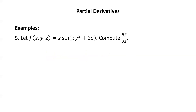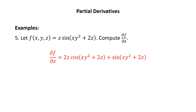Let f of x, y, z equal z sine of xy squared plus 2z. Compute the partial of f with respect to z. This is a product rule: the first term z times the derivative of sine of xy squared plus 2z, which is cosine of xy squared plus 2z times 2 by the chain rule, plus the second term sine of xy squared plus 2z times the derivative of z, which is 1.